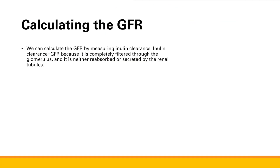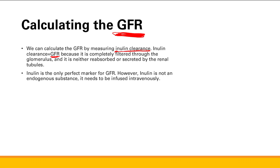This is relevant because it helps us calculate the GFR, which is the filtration rate in the kidney — basically a measure of how well the kidney is functioning. We can calculate GFR very well by measuring inulin clearance, because inulin clearance equals GFR. Inulin is completely filtered through the glomerulus and is neither reabsorbed nor secreted by the renal tubules, so clearance equals GFR.